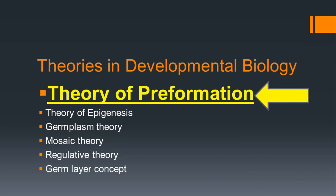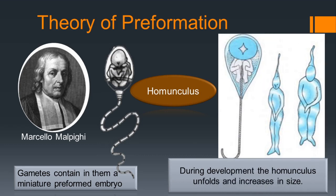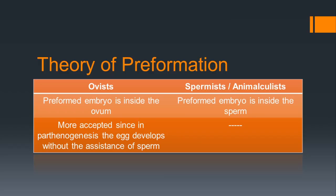The theory of preformation was proposed by Marcelo Malpighi. According to this theory, the gametes contain a miniature preformed embryo called homunculus. During development, the homunculus present inside the gamete unfolds and increases in size to form the body of the new adult organism.